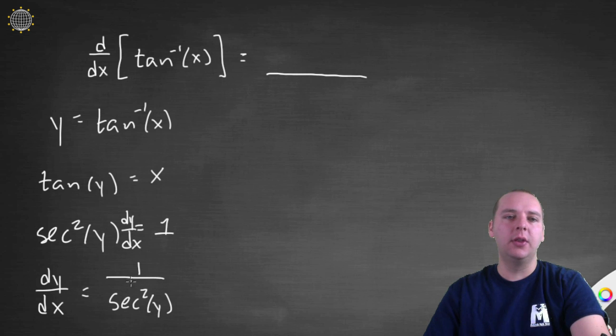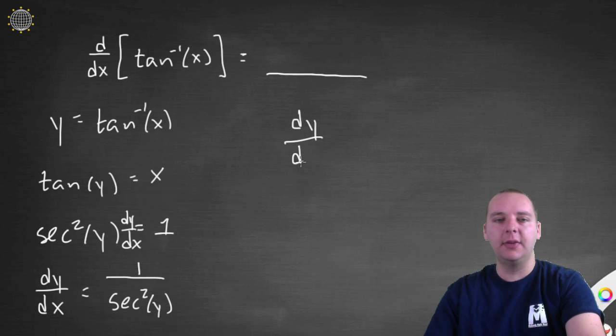So dy dx equals 1 over secant squared y. Now this one's an interesting one. You look at this and you say, well, how are we going to make a right triangle relationship out of that? That would be awfully ugly. Well, I've got a slicker way of doing this. If you recall, there was a trig identity for secant squared. In fact, secant squared was the same as 1 plus tan squared.